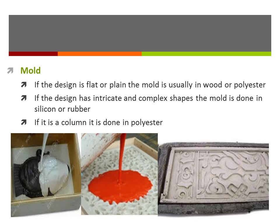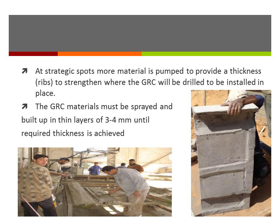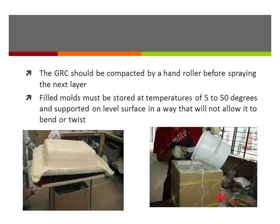In the casting process, the mix design is pumped into the mold using the spray gun. At strategic spots, more material is pumped to provide thickness ribs to strengthen where the GRC will be drilled to be installed in place. The GRC materials must be sprayed and built up in thin layers of three to four millimeters until the required thickness is achieved.